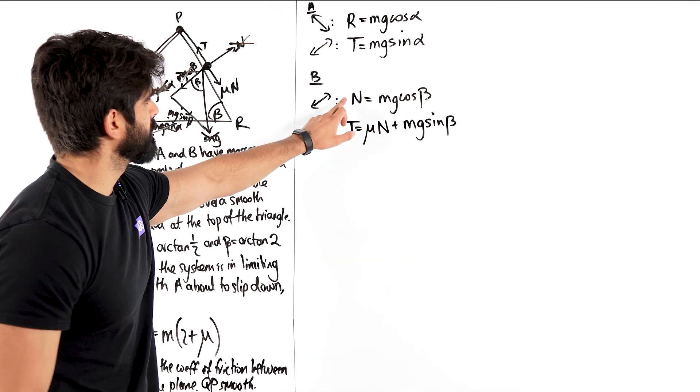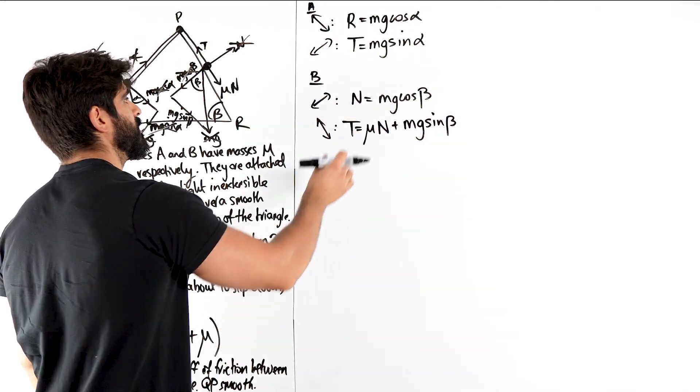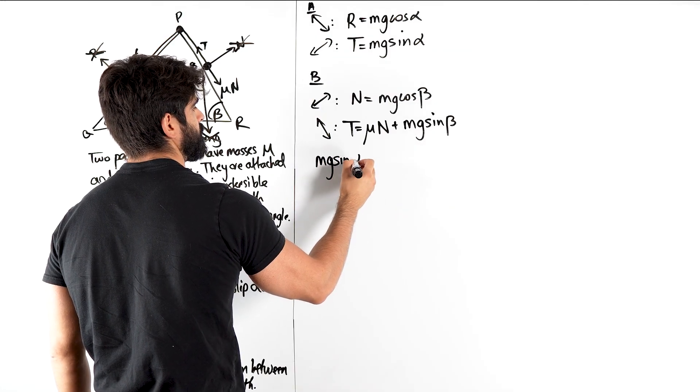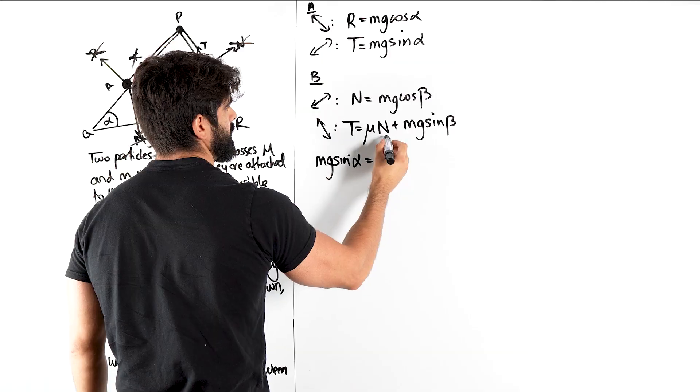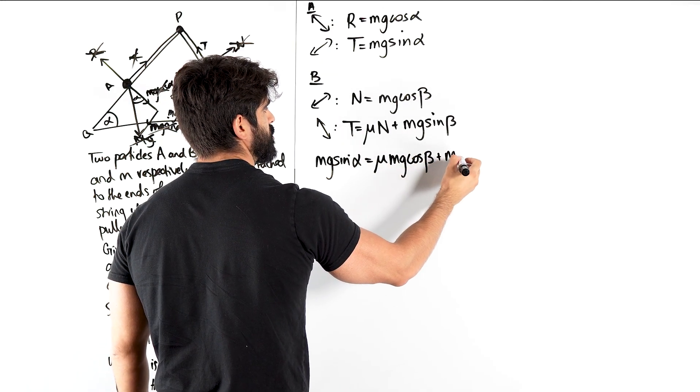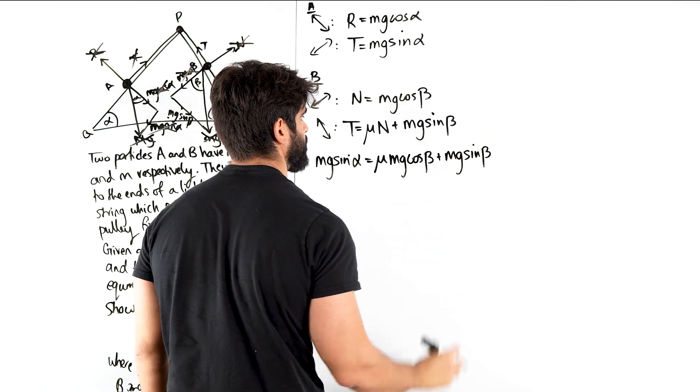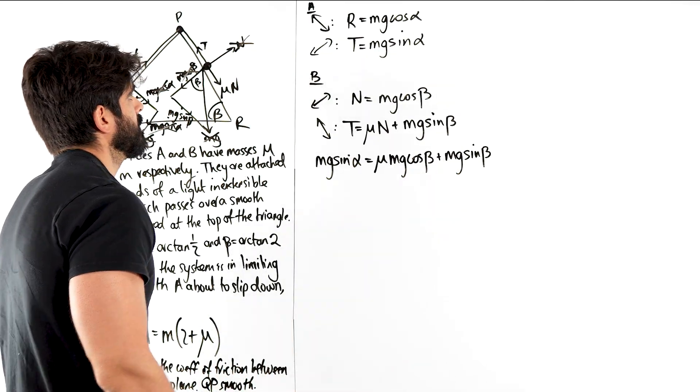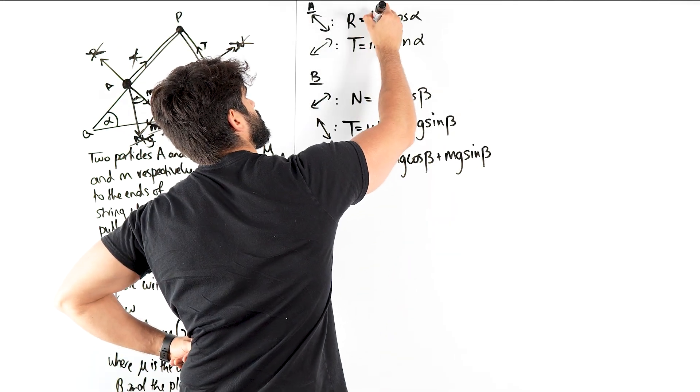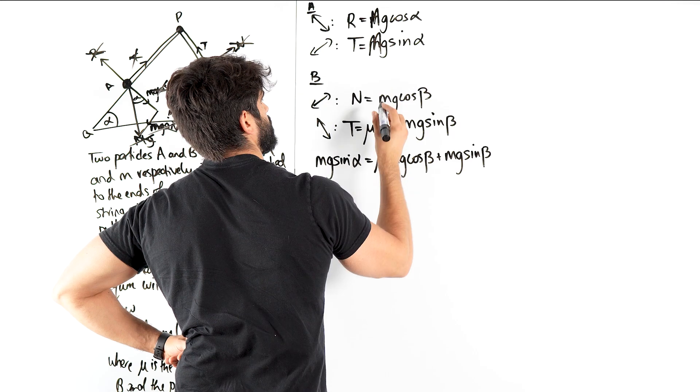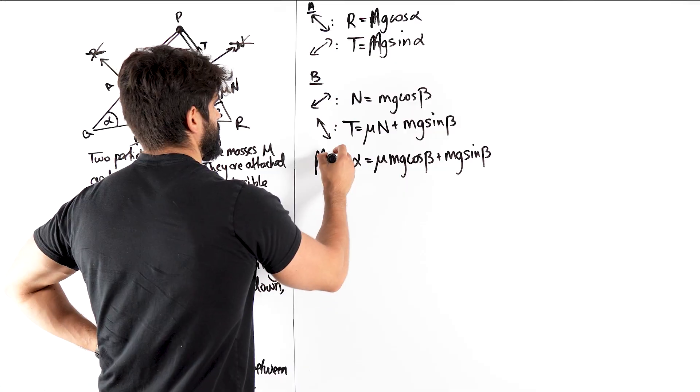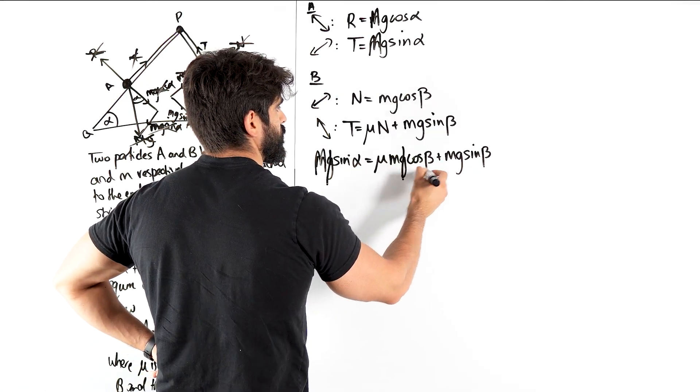Now we're going to sub in N and we can sub in T. So when we sub in T, we get MG sin alpha is mu N which is MG cos beta plus MG sin beta. Now here actually I need to be careful because I've written M but it's actually capital M. These are all capital Ms. Because I was about to cancel all the MGs, that would have been wrong. Cancel, cancel, cancel.